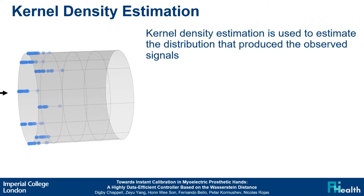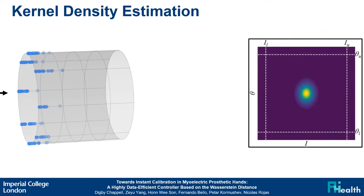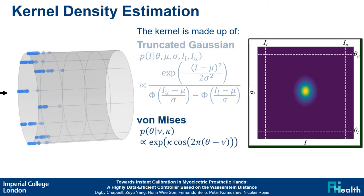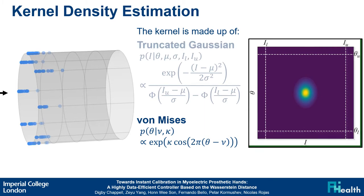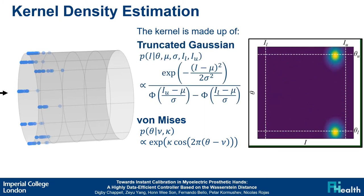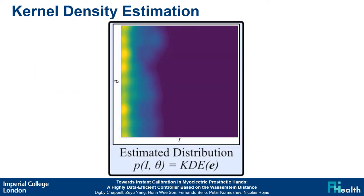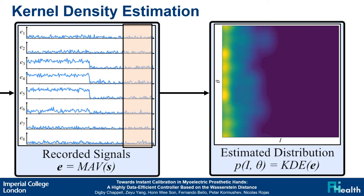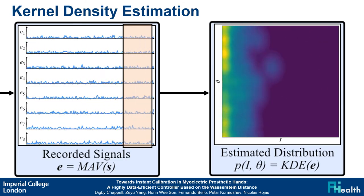To estimate the distribution that produced the observed signals, we use kernel density estimation. The kernel is made up of a truncated Gaussian in the linear dimension, which is limited by the upper and lower sensing limits of the electrode armband, and a von Mises distribution, also known as a circular Gaussian, in the radial dimension. Together, they form a kernel that wraps in one dimension and is truncated in the other dimension. We apply this kernel density estimation to the incoming signals, resulting in an estimated distribution at each point in time.